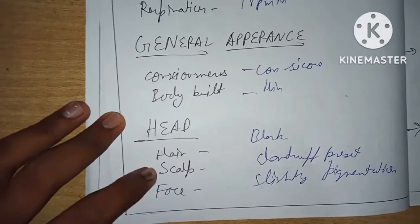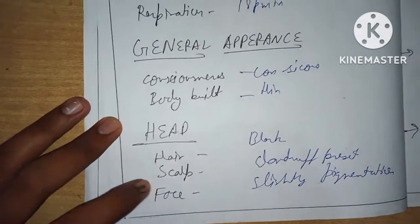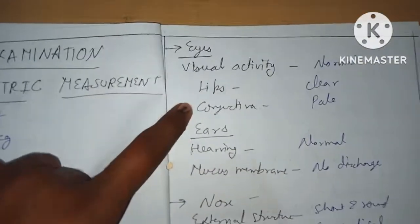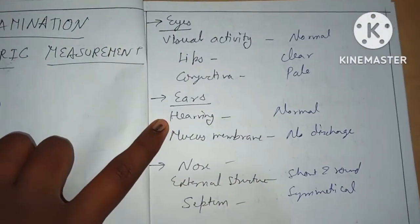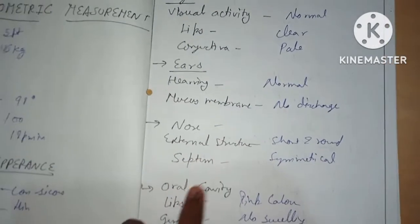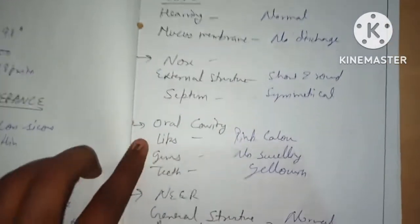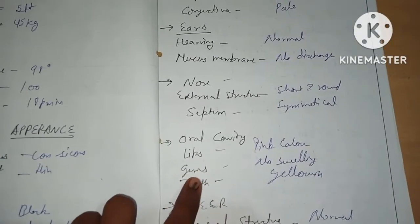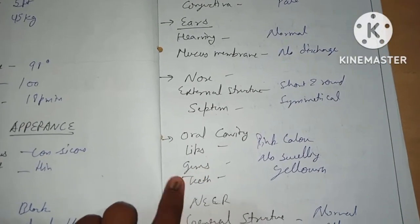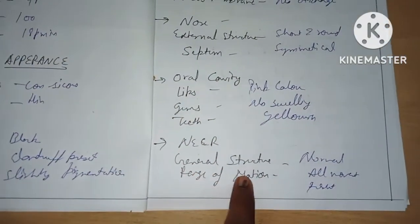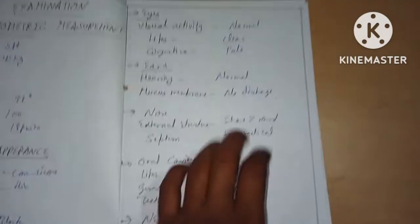Physical examination continues with: body build, head, hair, scalp, face, visual acuity normal, lips clear, conjunctiva pale, ears — hearing normal. Mucous membranes, nose — external structure short and septum symmetrical. Oral cavity: lips pink, gums with no swelling, teeth yellowish. Neck: general structure normal, range of motion also normal.